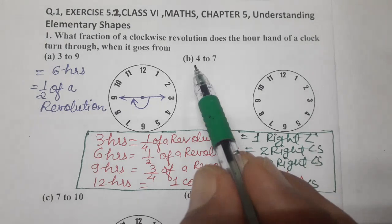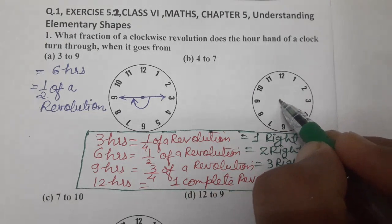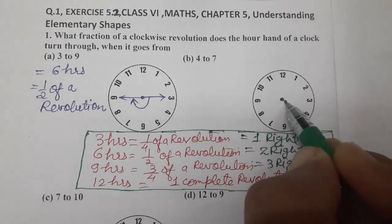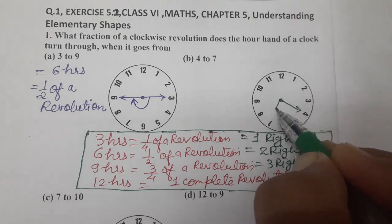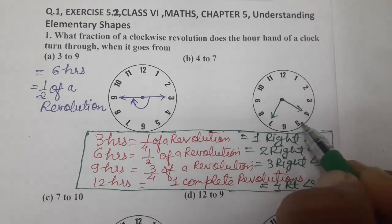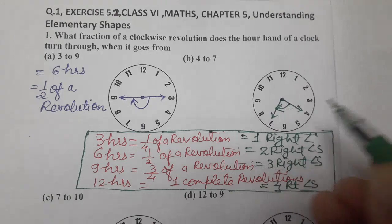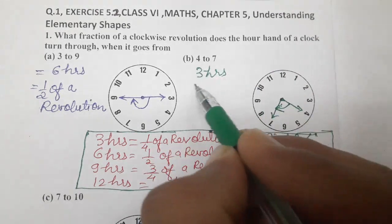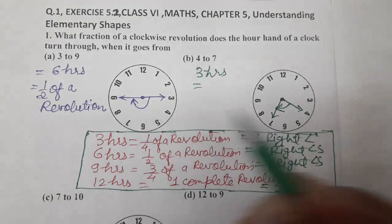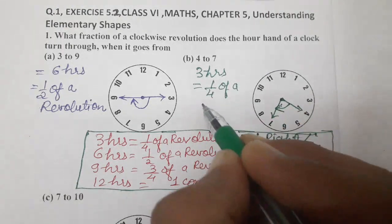So, now, let's do our question number B part. 4 to 7. So, mark the center. 4 is here. And 7. 7 is here. So, 1, 2, 3. 3 hours. We have moved through 3 hours. So, we will write 3 hours. For 3 hours, how many revolutions? What part of revolution it is? 1 fourth. So, write 1 fourth of a revolution.